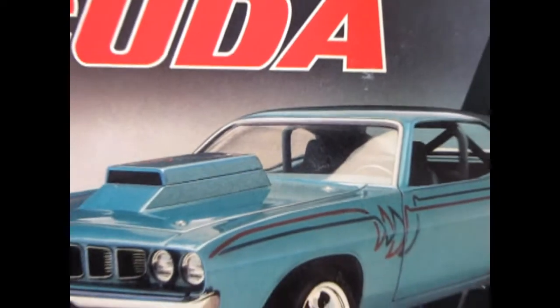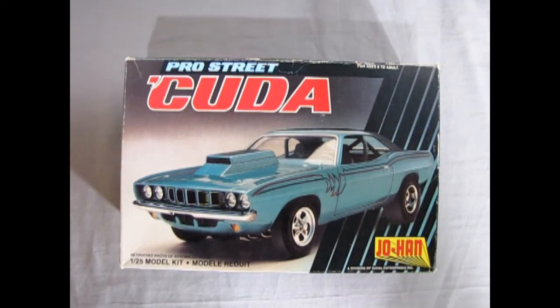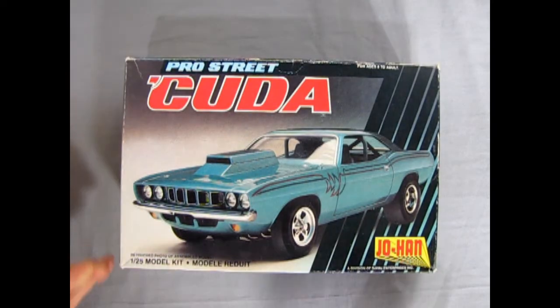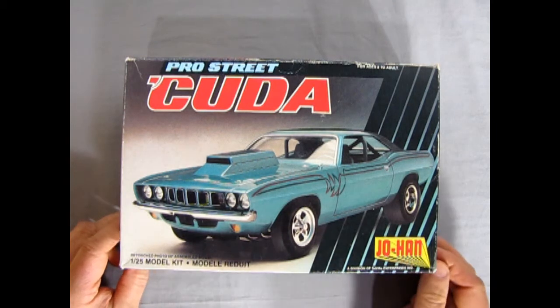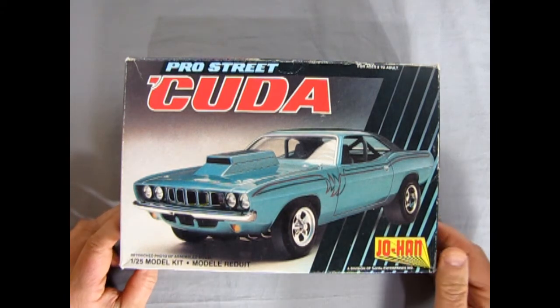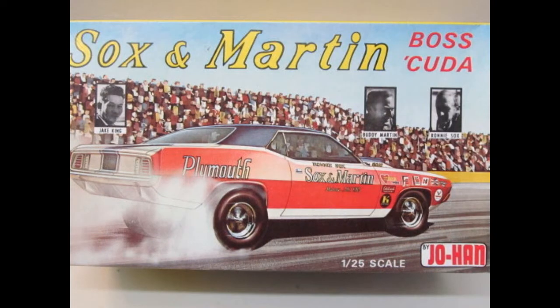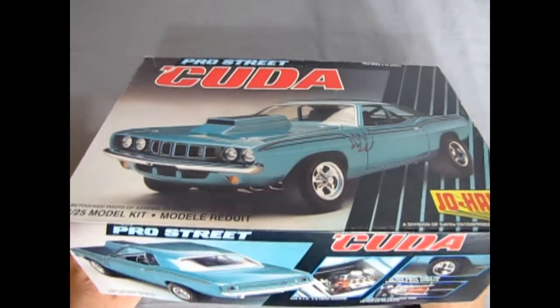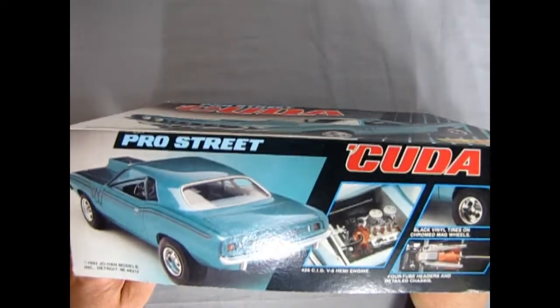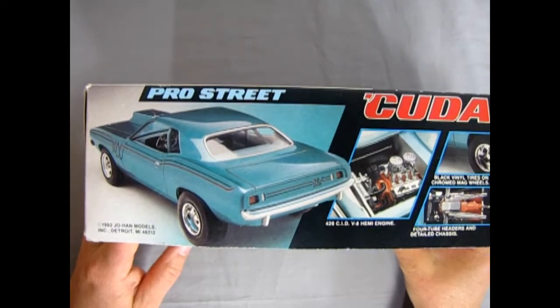Well, without further ado, let's go down to the showroom and see what's in the box. Now, we go all the way back to the street where we've got our 1971 Pro Street Cuda by Johan. This model kit came out in 1992. However, this kit actually came out as a Sock and Martin version back in the 70s. It's just been re-issued and re-boxed a billion times. And this is sort of the final time for Johan in its last years.